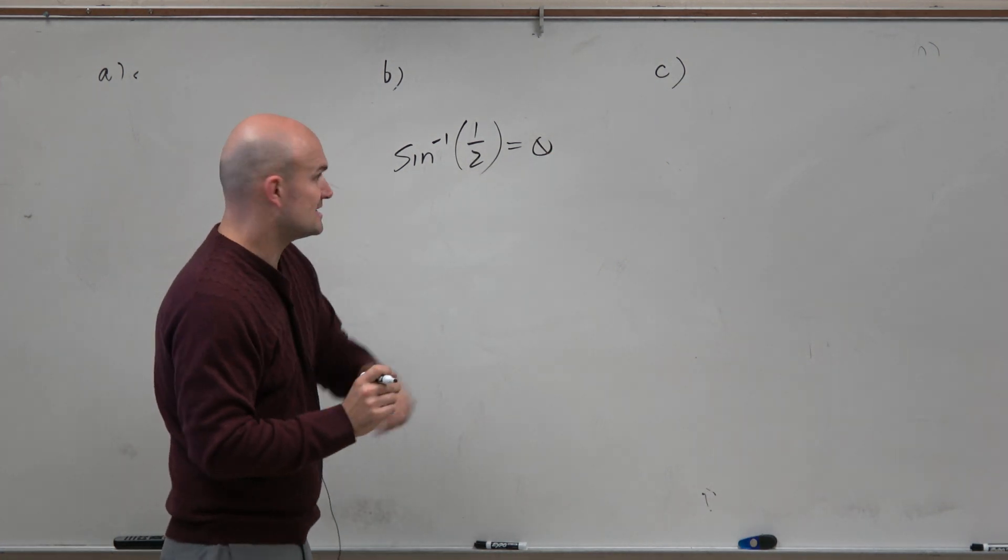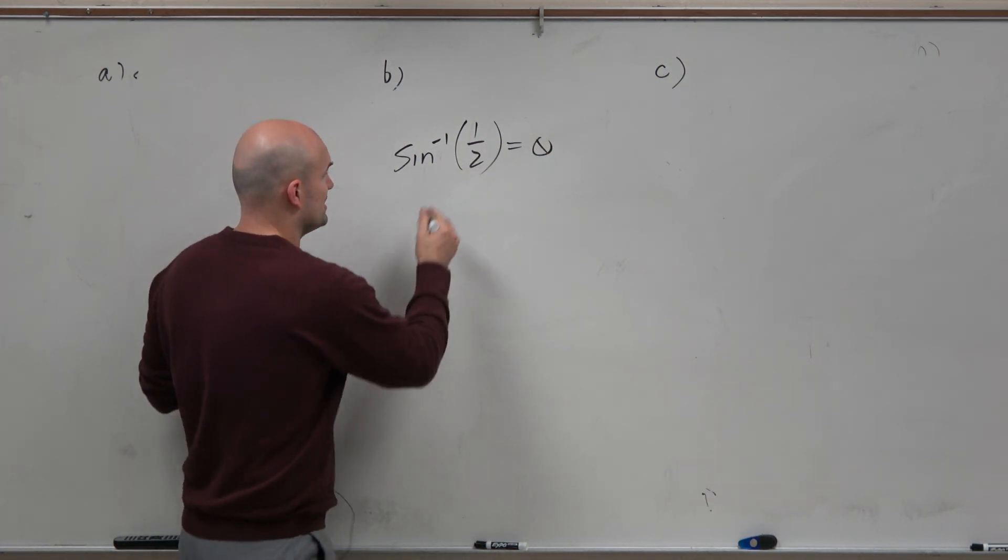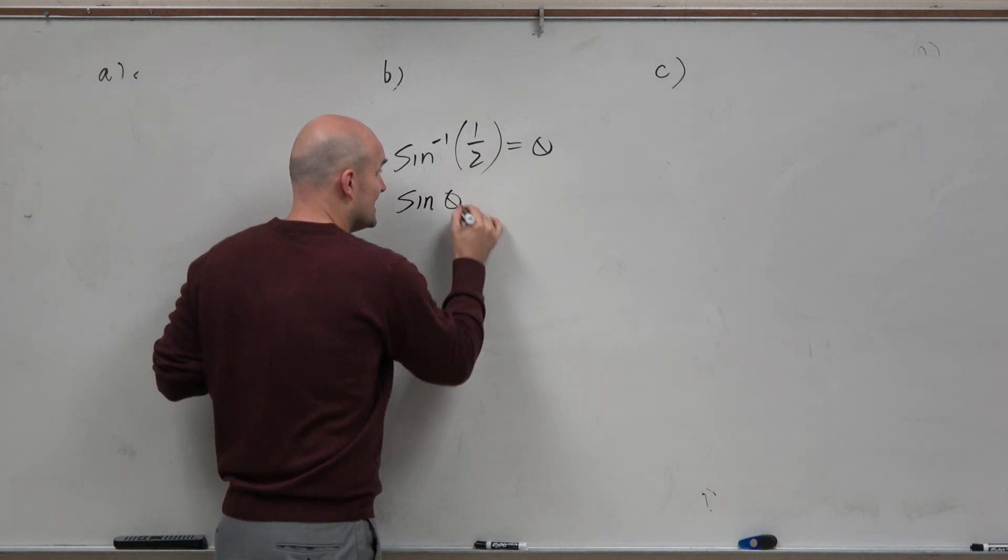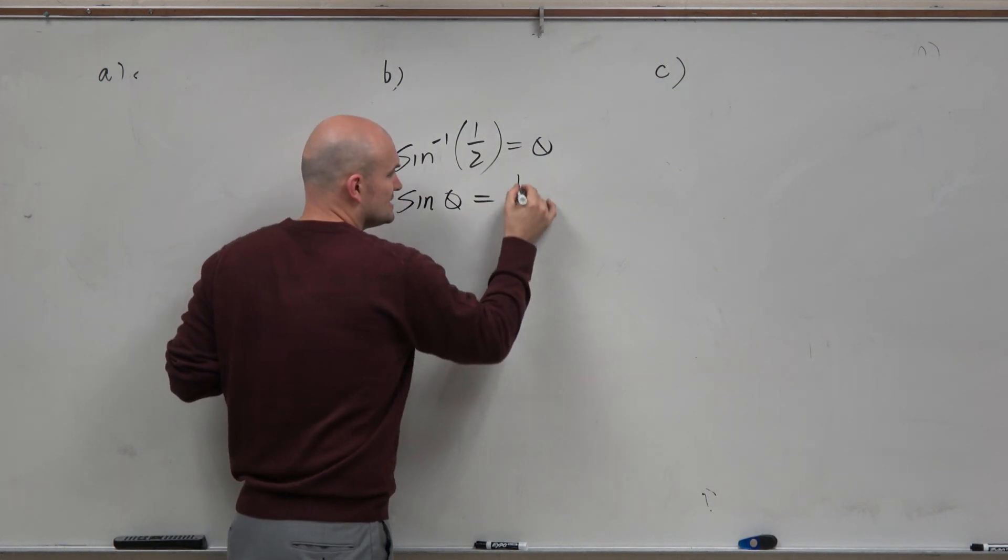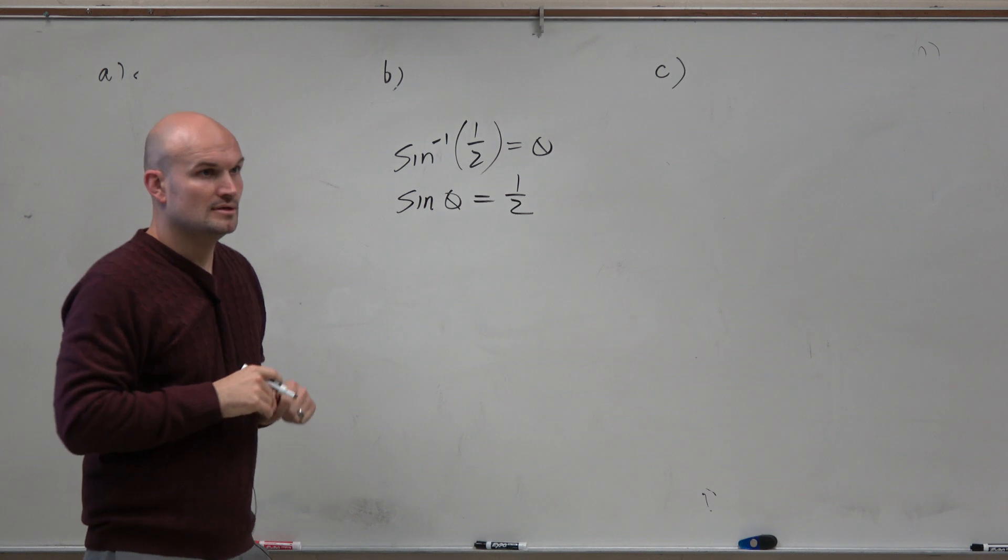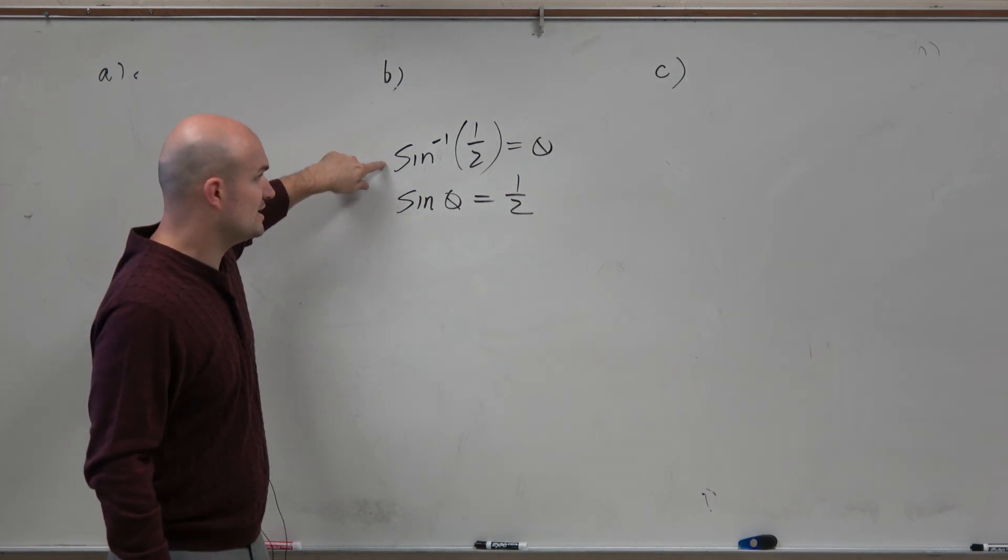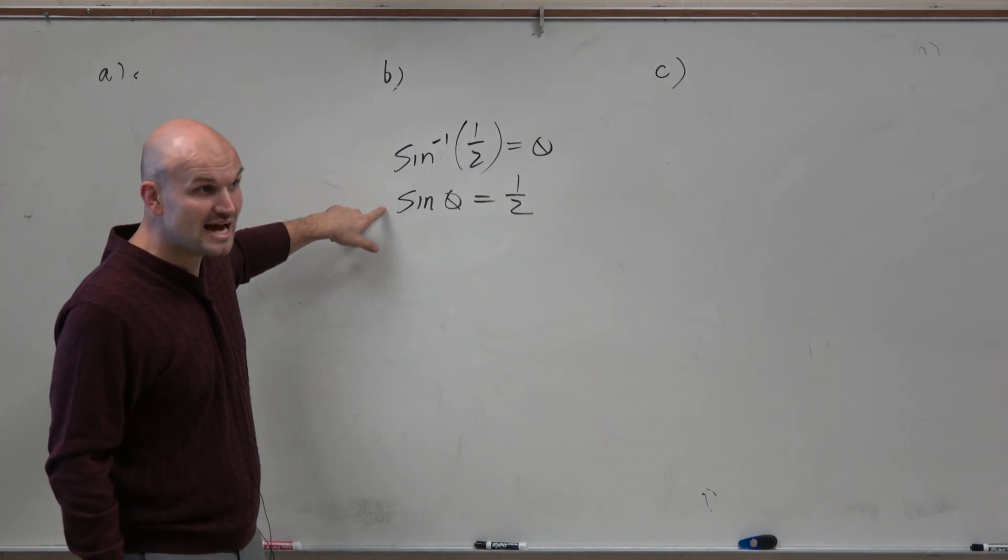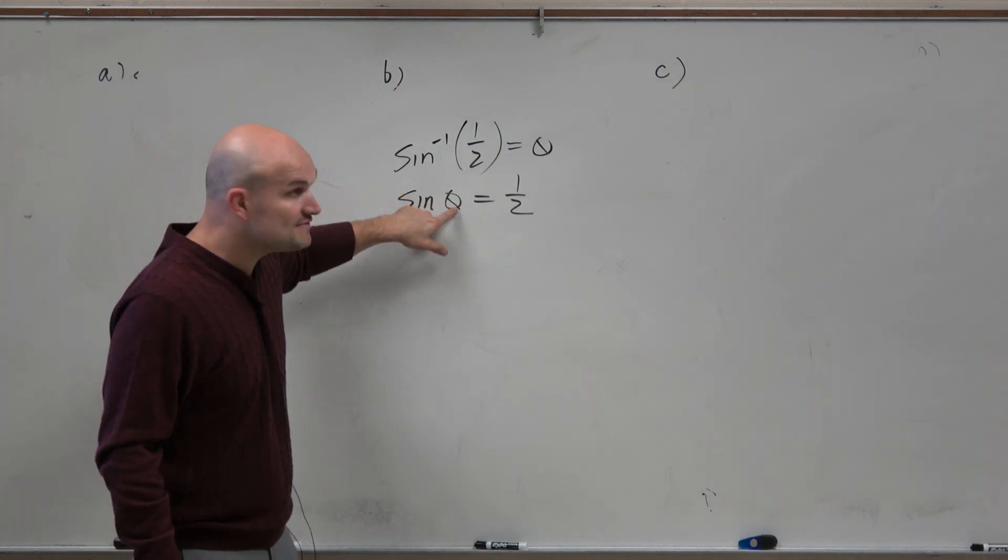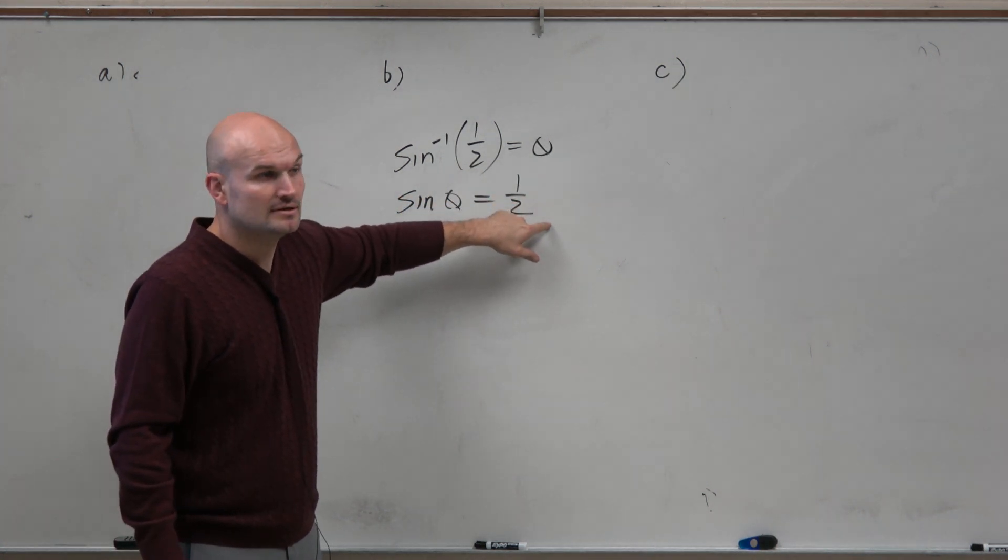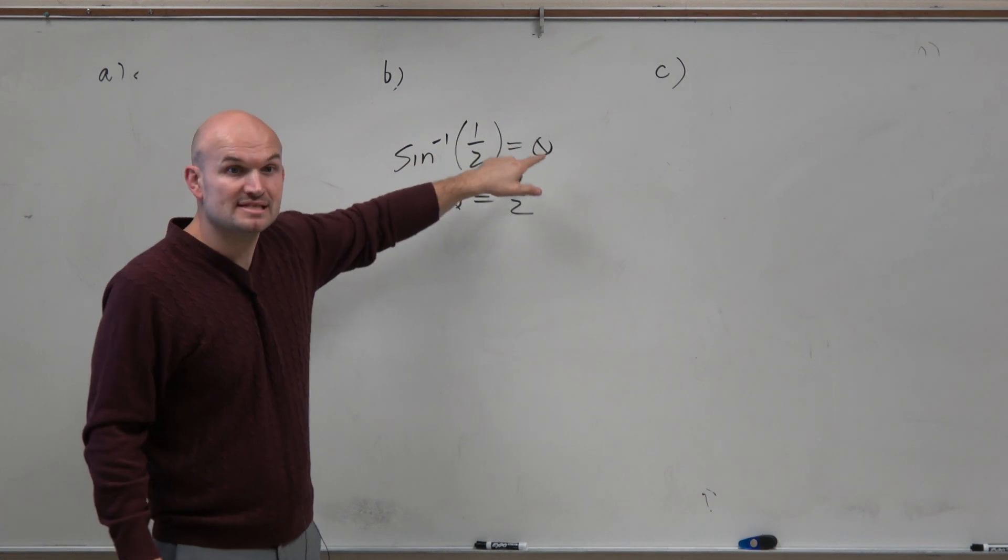Now, here's something I need you guys to understand. This can also be written like this: the sine of theta is equal to 1 half. So this is the exact same statement written in sine inverse notation. This is it written in sine notation. The sine of something is equal to 1 half. That means the sine inverse of 1 half is equal to theta.